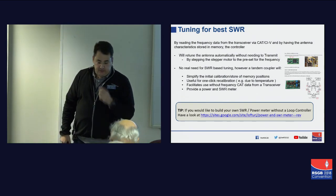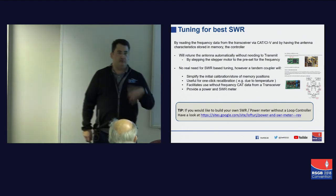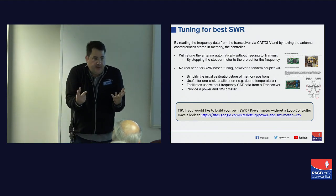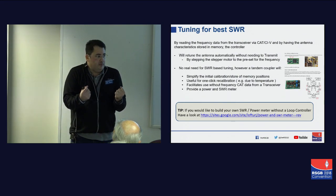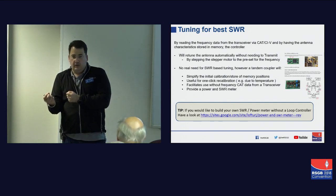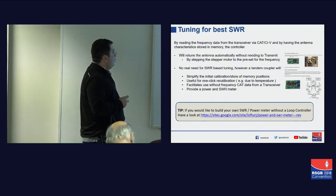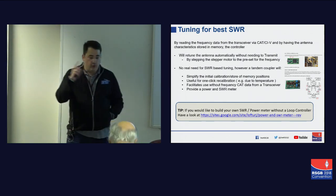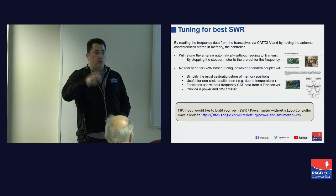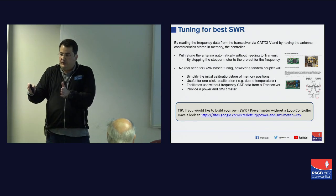One thing that can catch you out: if it's freezing outside and then it's 20 degrees Celsius the next day, the metal in the loop can contract and expand, and that affects the capacitance and inductance of the loop, affecting the tuning required. So we then have to recalibrate the loop. By doing one SWR tuning cycle and hitting a calibrate button, all previous tuning solutions are still valid because the correct offset has been applied.